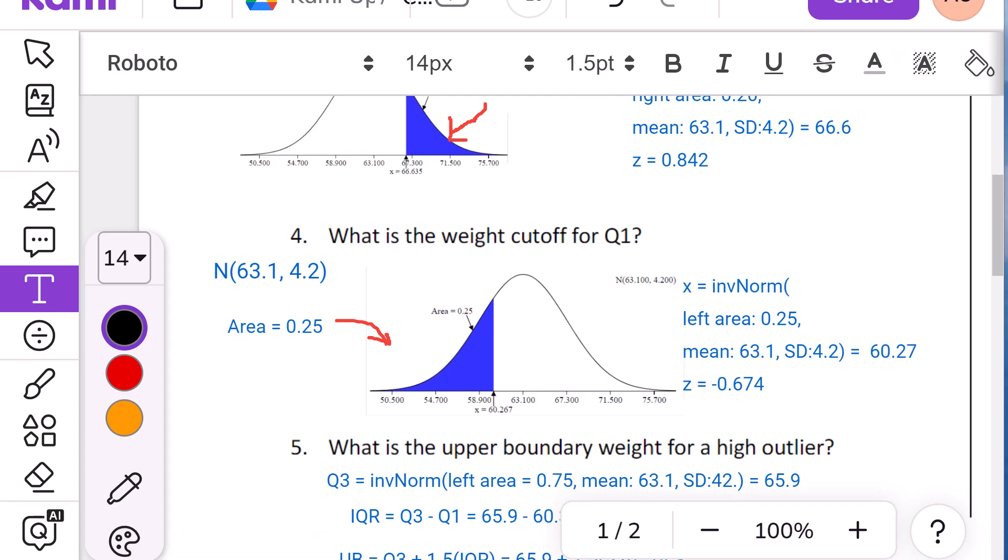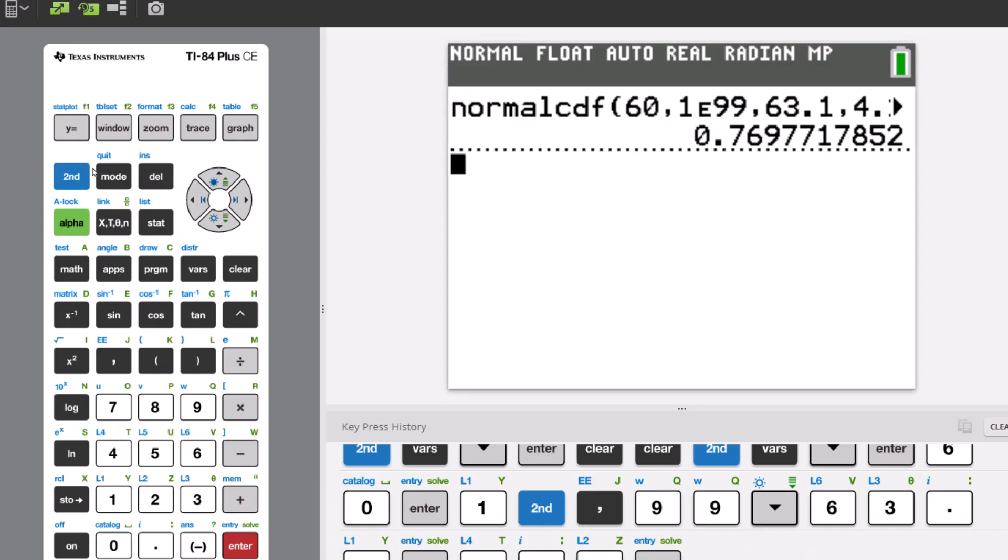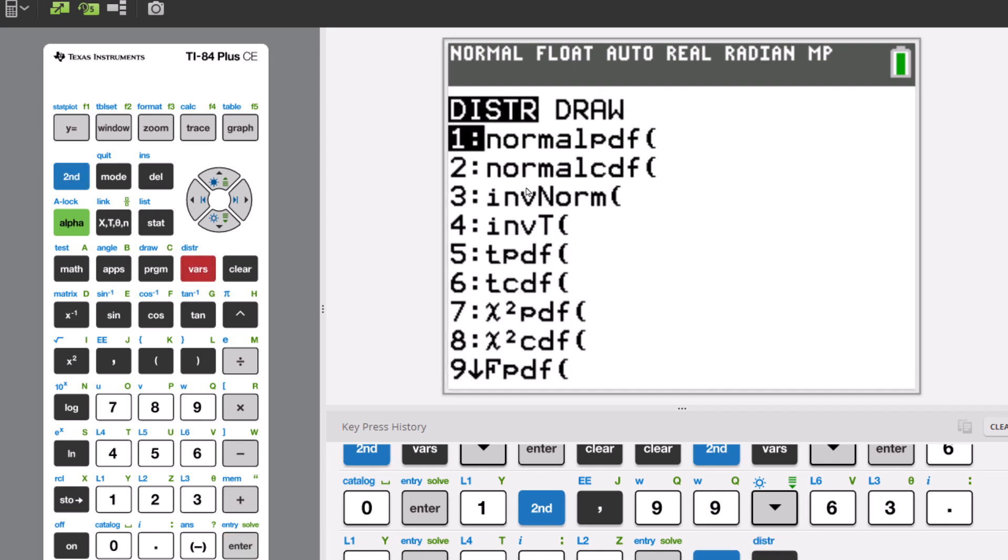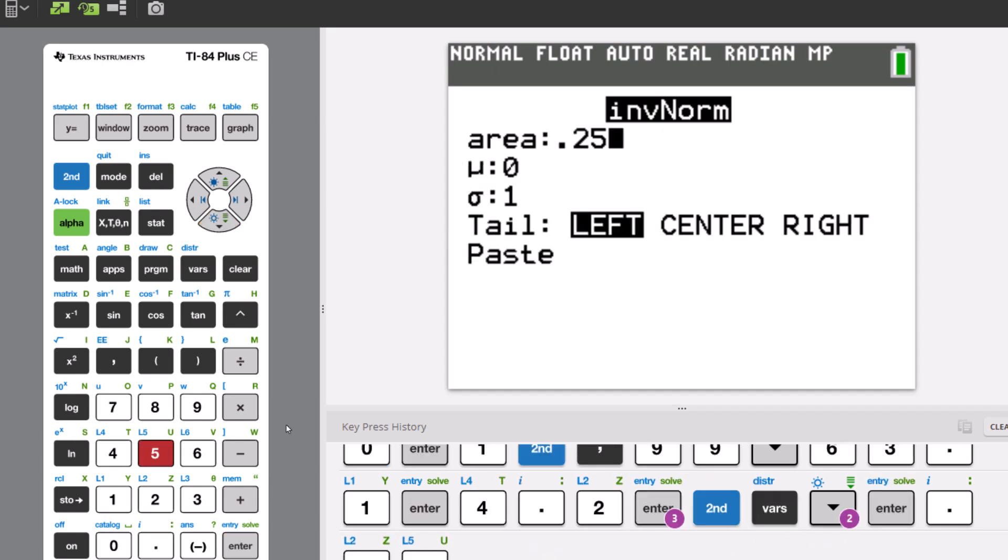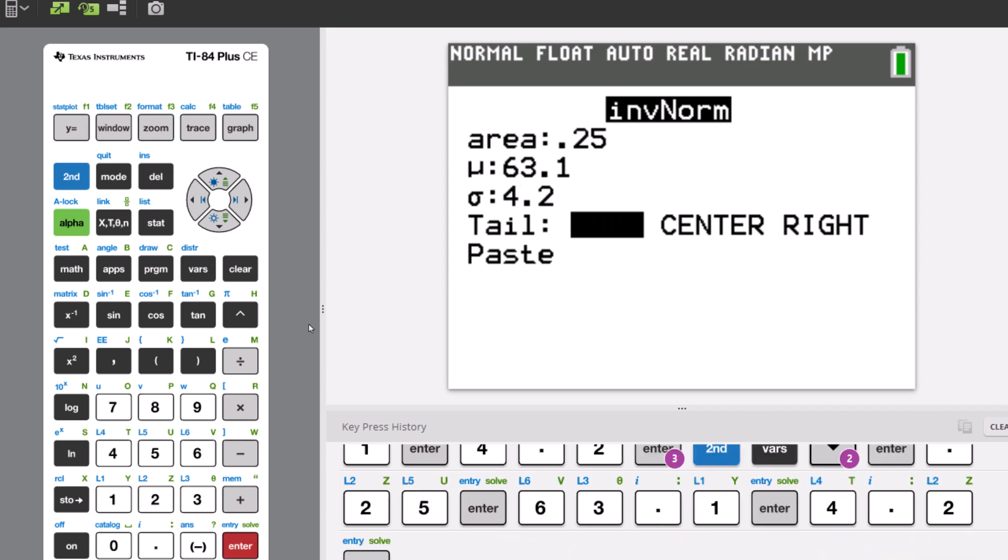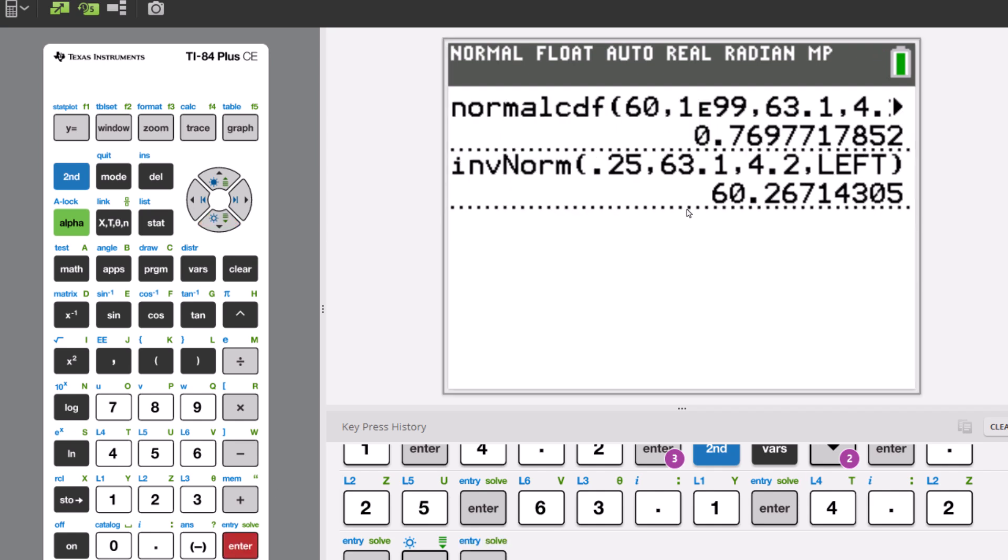Now, if we're doing the calculator for this, how do we do the cutoffs? Well, for the calculator, we're going to do the inverse because we're going backwards, right? Second distribution, so instead of normal CDF, by the way, I never use normal PDF, so ignore that first one. We're going to use inverse norm. And if it's Q1, I want 25% of the area. Then I can put in the actual values. And since it's a percentile, it's left area. And hit enter. And there you go. There's the values from that. So that's how to do this part.